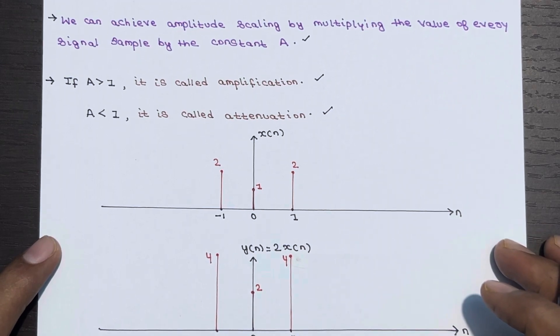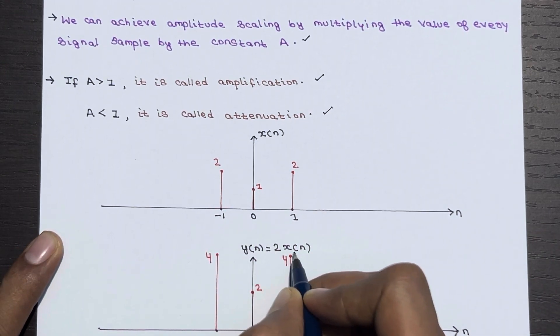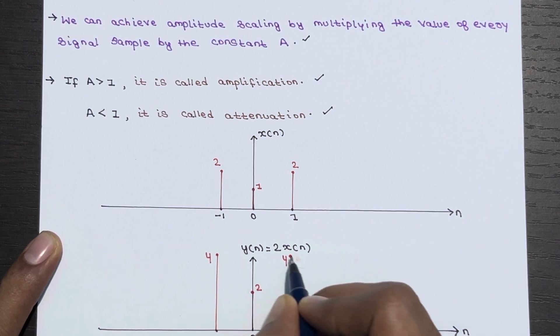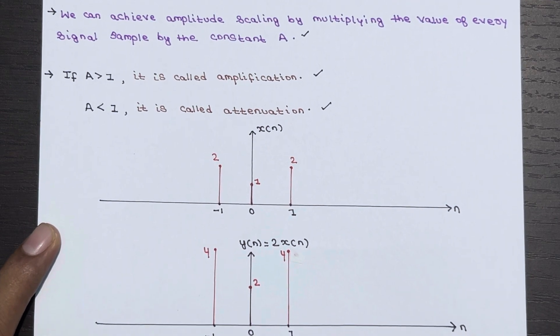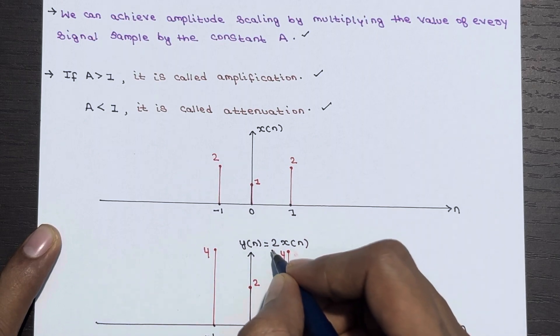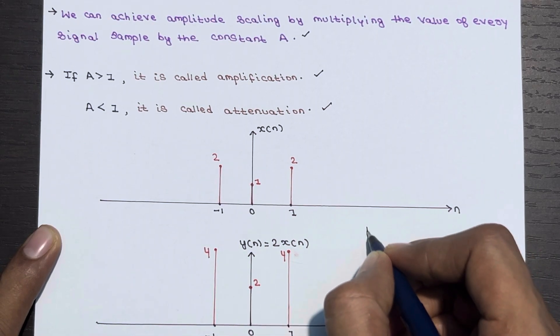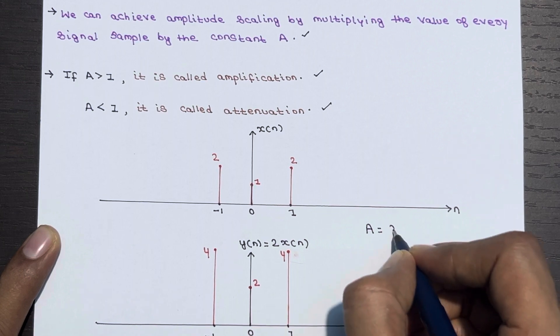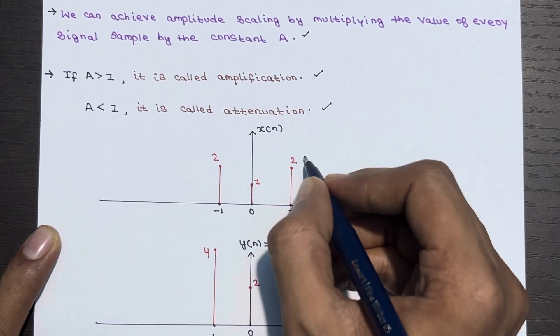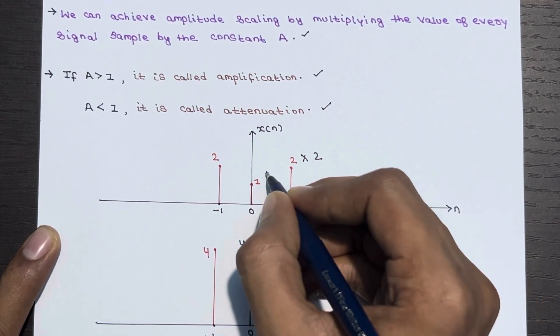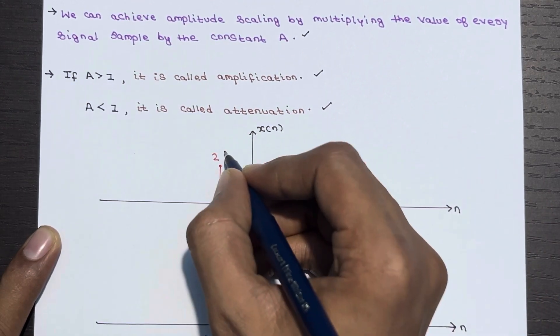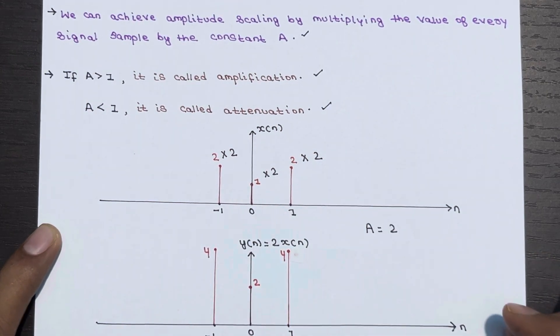For amplitude scaling, y(n) = 2 × x(n). This is the expression for amplitude scaling. Here the constant A = 2, so we multiply every signal sample by 2.